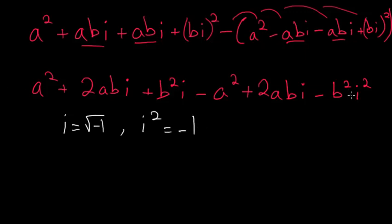So we can rewrite this again now combining all the terms. So we have a squared minus a squared, so these cancel out, and we have 2abi plus 2abi.